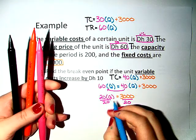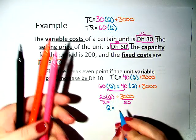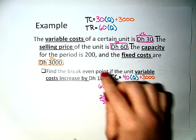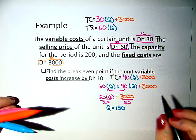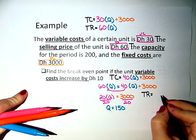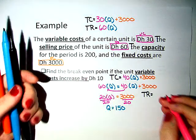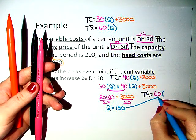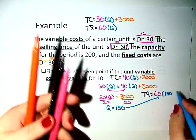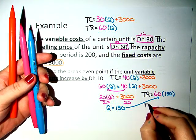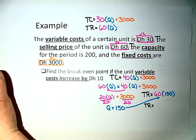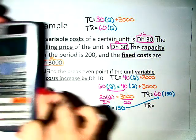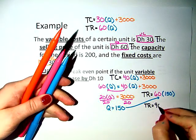So that would mean that my quantity is 150 units. Now this isn't the break-even point yet, so we need to put it back into the total revenue equation. So my total revenue is 60, and now we're going to put in the 150. So we put it into the calculator, 60 times 150, and we get that my total revenue is 9,000.